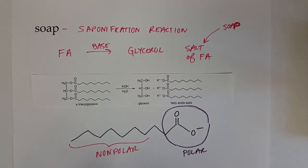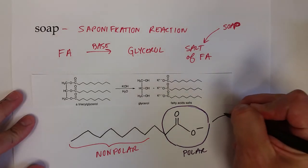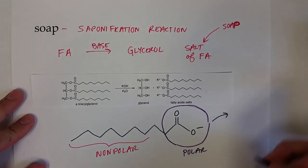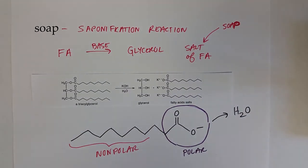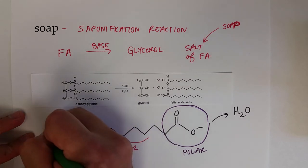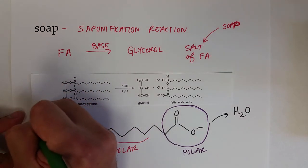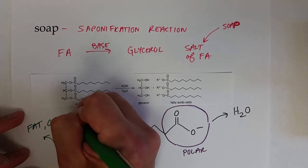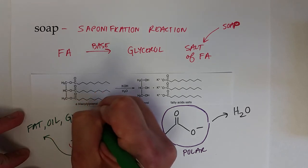Okay, and so when we use soap to wash our hands, what we're doing is we're trying to get rid of basically nonpolar molecules like fats and oils and grease. The polar end of the soap is attracted to water, which we're trying to wash our hands with. And the nonpolar hydrocarbon is attracted to the fat or oil or grease that we're trying to wash off.